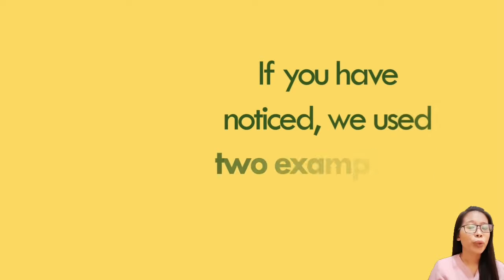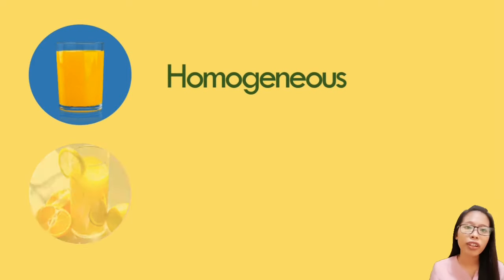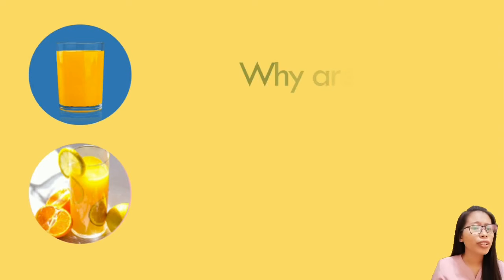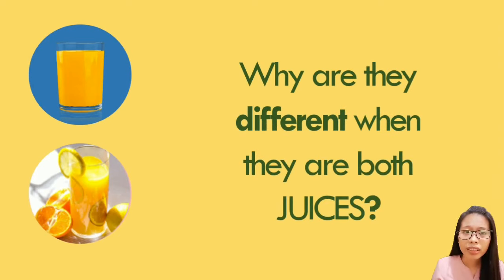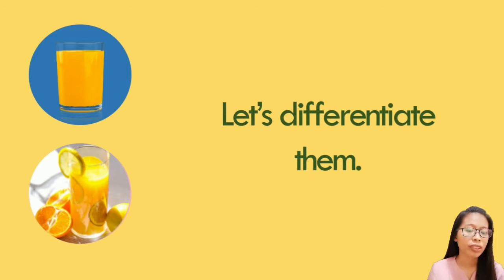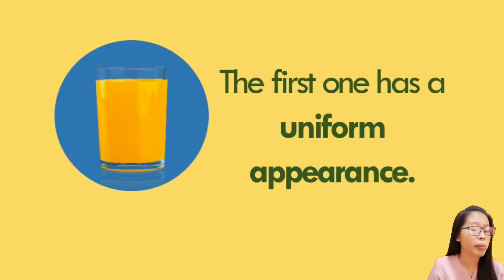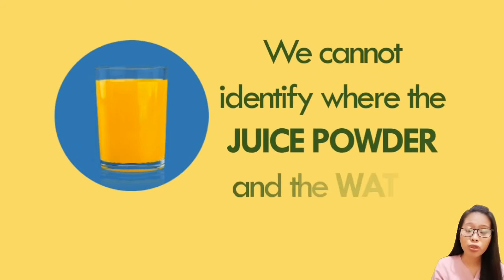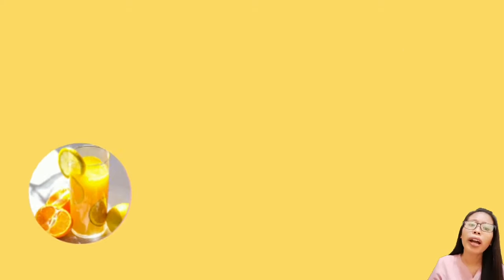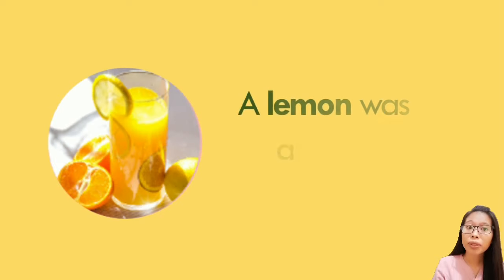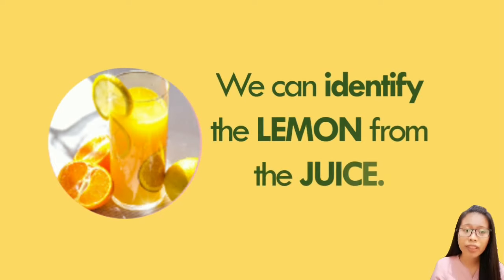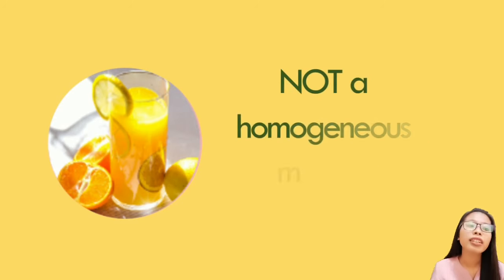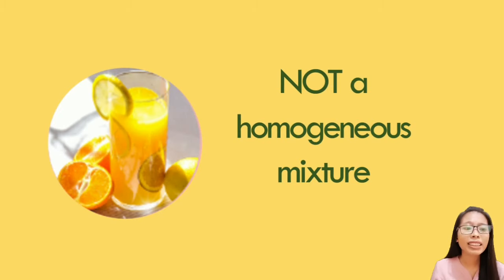If you have noticed, we used two examples of juice — one is considered homogeneous while the other is heterogeneous. Why are they different when they are both juices? The first one has a uniform appearance and we cannot identify where the juice powder and the water are. While on the other one, a lemon was added — we can identify the lemon from the juice. That's why it was not a homogeneous mixture, as its appearance was not uniform.